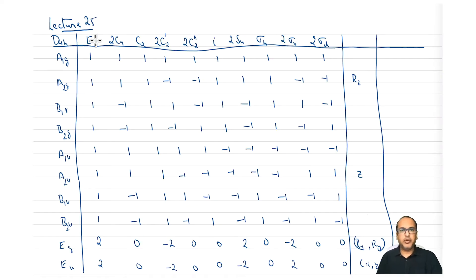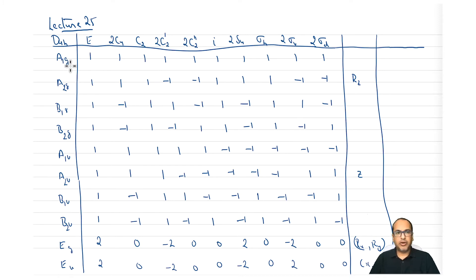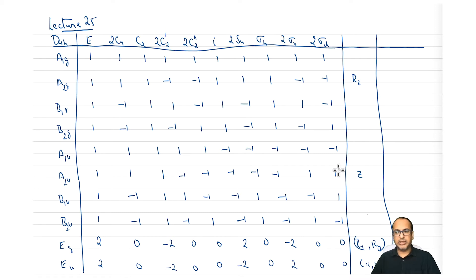In the last lecture we saw how to write a character table - the complete list of irreducible representations. Using the great orthogonality theorem, we started with the molecule XCF4, found its point group, wrote all the symmetry elements and operations, and listed the complete irreducible representations. We also did the nomenclature for all IR representations using Mulliken symbols, and then found the basis sets for unit vector transformation - which IR representation z forms a basis for, which x and y form a basis for, and so on.